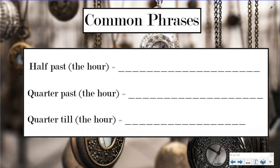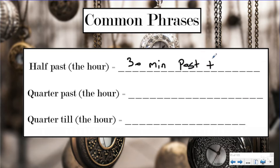Let's take a look at some common phrases. Sometimes when you ask somebody the time, they'll say half past the hour. What that means is 30 minutes, because a half of an hour is 30 minutes — we just learned that by looking at our clock face. That'd be 30 minutes past or after the hour. So whatever the hour is, then 30 minutes past that.